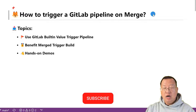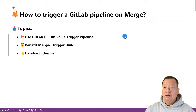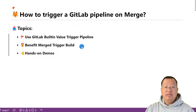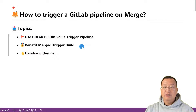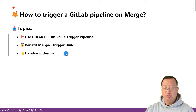Today we are going to talk about how to trigger a GitLab pipeline when we merge our code, in two ways. There are three main topics we'll cover today: use GitLab built-in variable to trigger a pipeline — the built-in variable is CI_PIPELINE_SOURCE — and we'll discuss the advantage of triggering a pipeline upon merging. This is like a safety net for our code changes that ensures our code doesn't break what is already working.